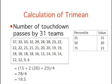The first measure is called the trimean. It is a weighted average of the 25th percentile, the 50th percentile, and the 75th percentile.